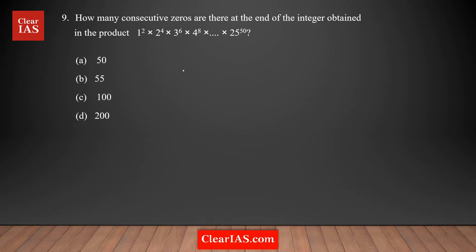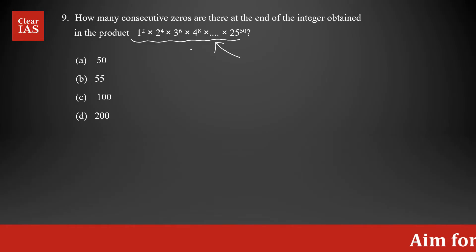Let's do question number nine: how many consecutive zeros are there at the end of the integer obtained in this product? To figure out how many zeros are at the end of this product, we closely analyze it. If there is a 10 in the product, the product is going to end with one zero. So the number of tens in the product will determine how many zeros are at the end.